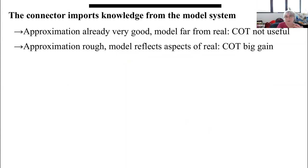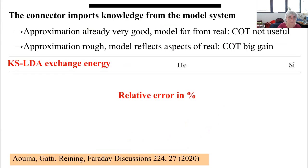The model cannot be completely unrelated, because otherwise you don't gain by determining and storing the information on the model. You gain a lot when the approximation is not so good but the model is very pertinent. As a small example: work done by Ayub Awina, who calculated the exchange energy using a local density approximation for helium and silicon.